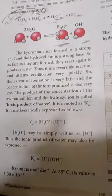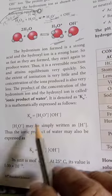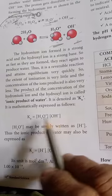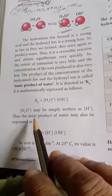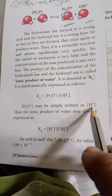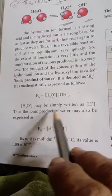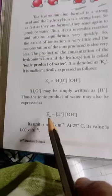KW is mathematically expressed as follows: KW is equal to H3O plus times OH minus. H3O plus may be simply written as H plus. Thus the ionic product of water may also be expressed as KW equals H plus times OH minus.